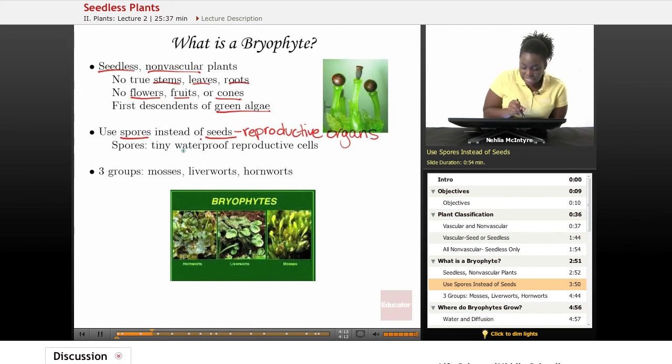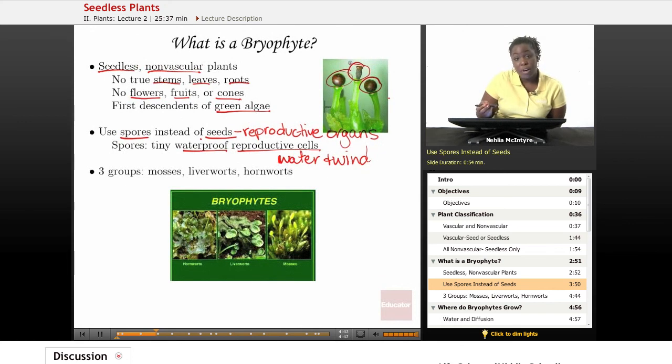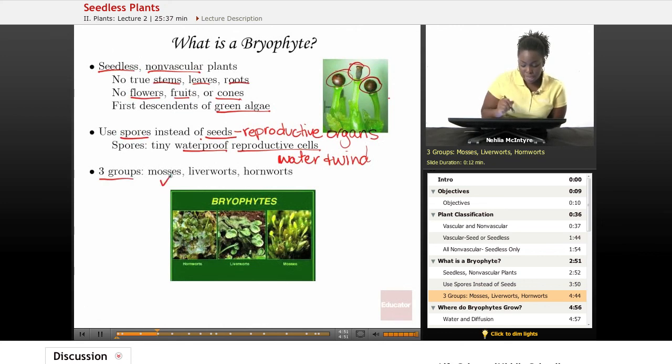Spores are just basically tiny, waterproof, reproductive cells, and in general, for bryophytes and other plants, those spores basically are moved by water and wind to help the reproduction of new plants take place. This is a picture of a bryophyte, and at the top of the bryophyte are the spores, and those spores will form new bryophytes. Now, bryophytes are classified into three different groups: the first group is the mosses, then we have liverworts and hornworts, and we'll discuss those.